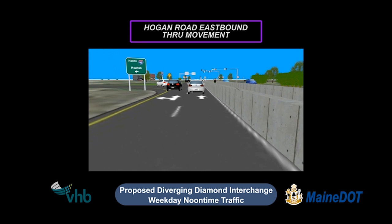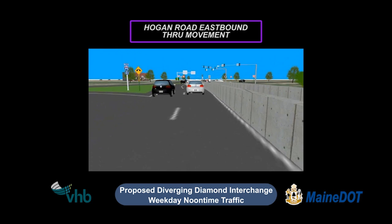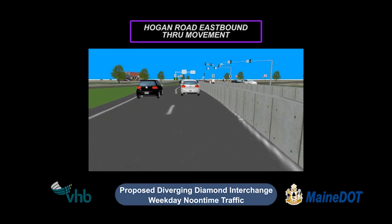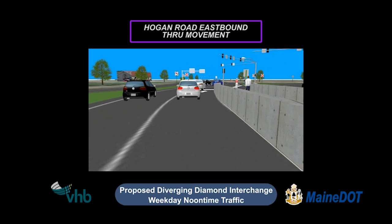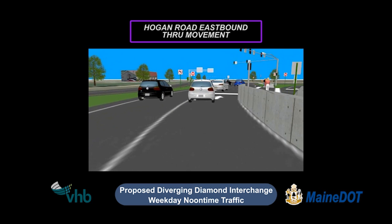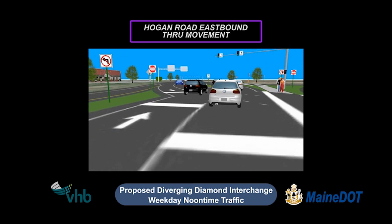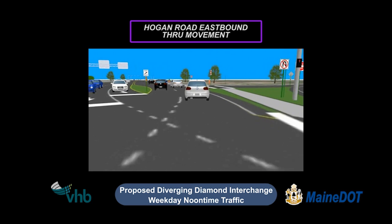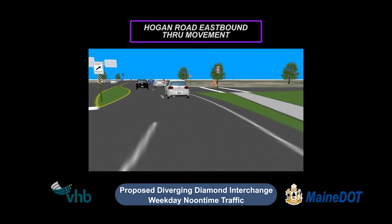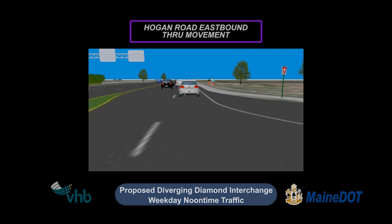As you continue straight across the bridge, you pass the I-95 northbound on-ramp to your left and approach the second crossover. When the light turns green, you continue through the crossover, returning back to the right side of Hogan Road.